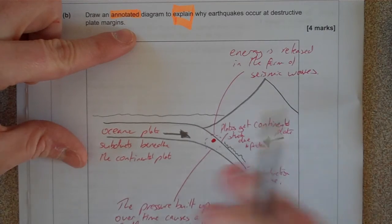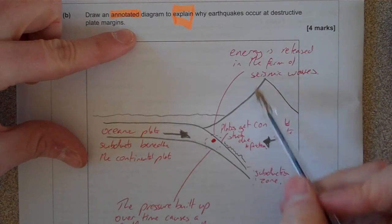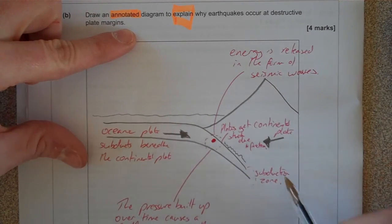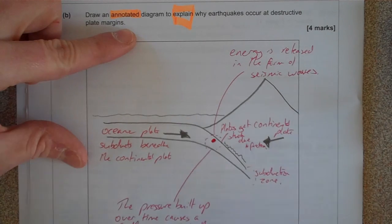So we've got a diagram, we've got annotations that explain what's going on, we've got keywords like subduction zone, continental plate.